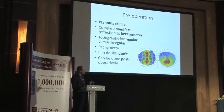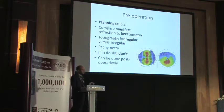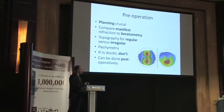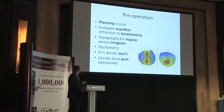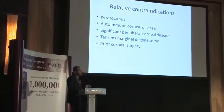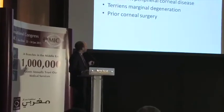I would refer keratoconus patients to a purely refractive surgeon for that. You also need to consider corneal thickness, measuring with pachymetry to ensure you are not cutting too deep. These incisions can also be done postoperatively — it does not have to be done at the time of surgery. Contraindications to LRI include keratoconus, autoimmune corneal disease, significant peripheral corneal disease, Terrien's marginal degeneration, and previous corneal surgery.